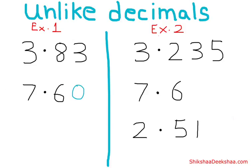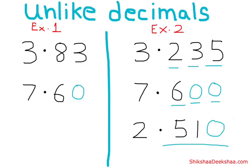In this example, the maximum number of decimal places is three. So for seven point six, we put two zeros at the end to get three decimal places. For two point five one, we put one zero at the end for three decimal places. Now all three numbers have three decimal places and we can call them like decimals.